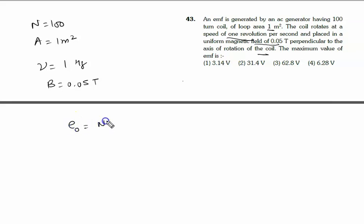Maximum value E₀ is given by NBAω. N is the number of turns, that is 100. B is the magnetic field, that is 0.05. Area is 1. Omega is 2π times frequency. Frequency is also 1.